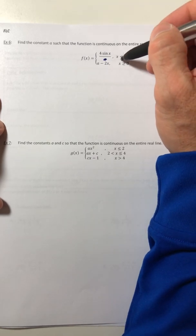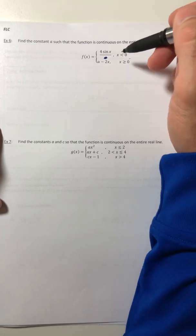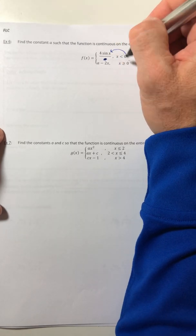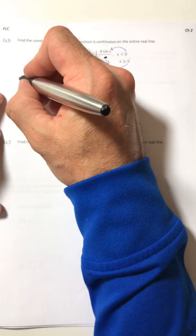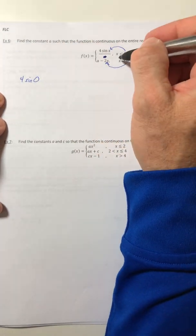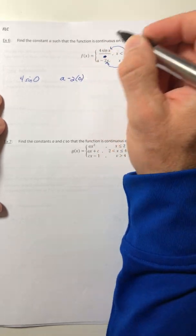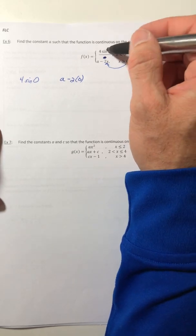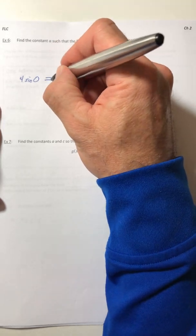Some of you are going to panic because there's no equal bar there — so what? Just plug it in. Stick the 0 in for x in both lines. So 4 sine of 0, and then the next one, a minus 2 times 0. If they connect together, then once you plug in 0 for x, you should come out with the same value — in other words, they should actually equal each other.